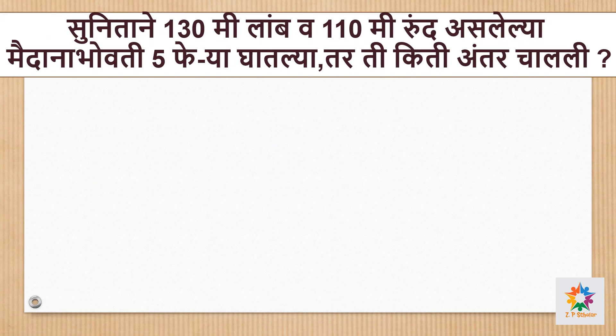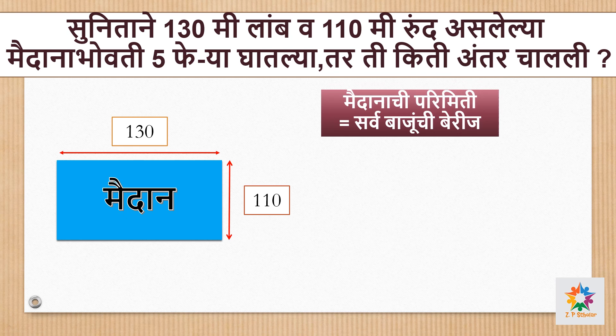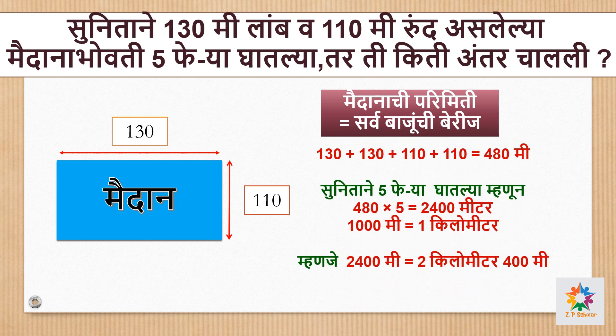बालमेटरांनो, आता आपण काही विशेष पूर्ण प्रश्न सोडवू. प्रश्न: सुनिताने 130 मीटर लांग व 110 मीटर उंदा असलेल्या मैदानाभोवती 5 फेरे गाठले, तर ती किती अंतर चालले? या देखाने आपल्याला प्रथम मैदानाची परिमिती काढावी लागेल. मैदानाची परिमिती बरोबर सर्व बाजूंची बेरीज. म्हणजेच एकशे परिमिती आली - चारशे ऐंशी मीटर.